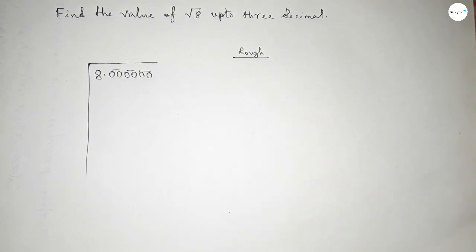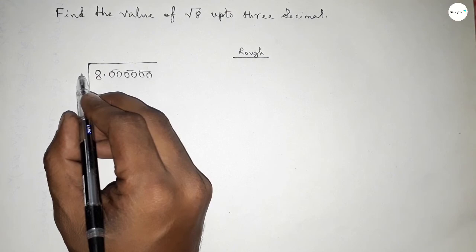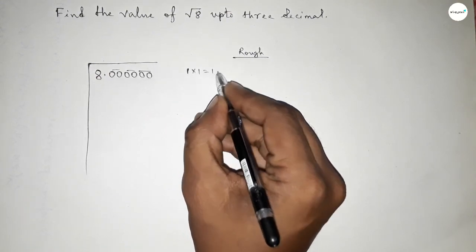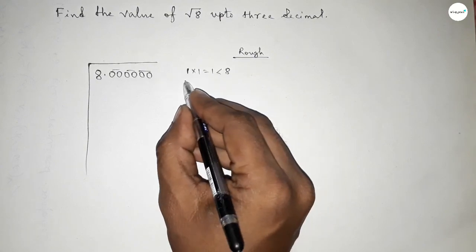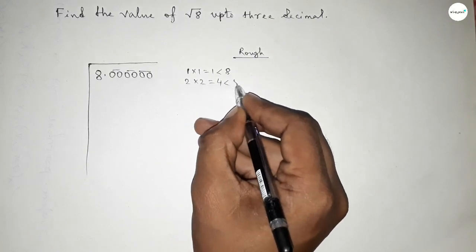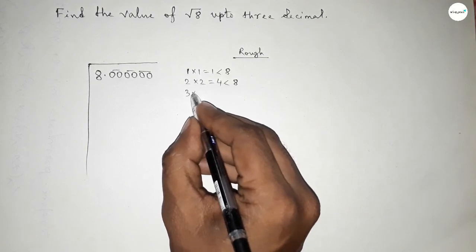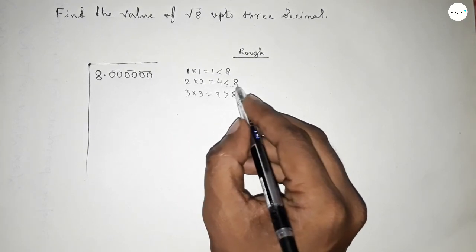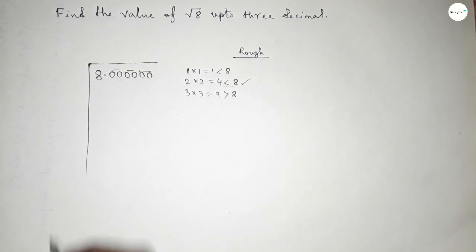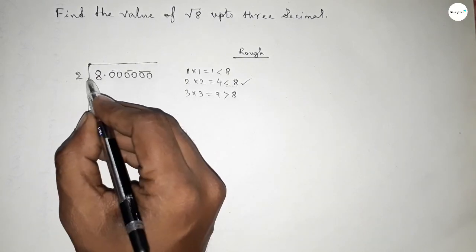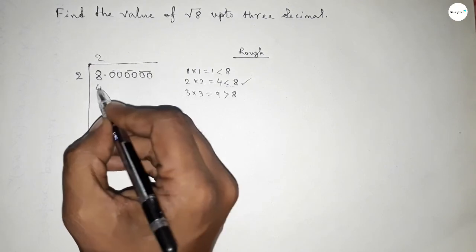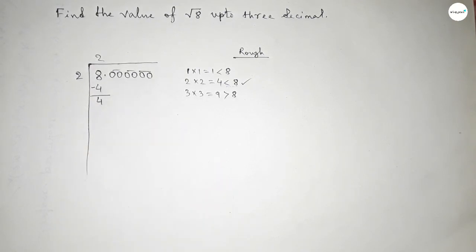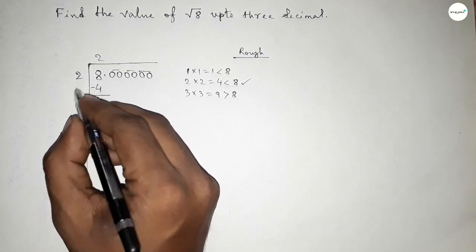Now, what number should we put here? We multiply that number by itself, and it should be less than 8. If you put 1, then 1×1=1, which is less than 8. If you put 2, then 2×2=4, which is less than 8. If you put 3, then 3×3=9, which is greater than 8. So we take 2. Putting 2 here: 2×2=4. Now subtracting: 8−4=4.